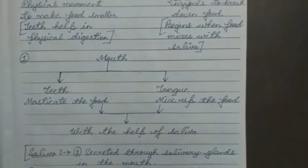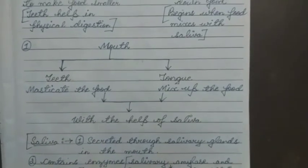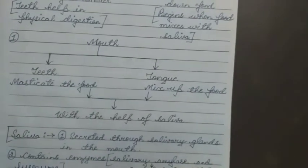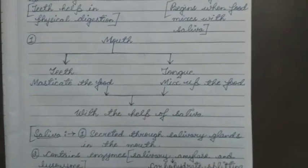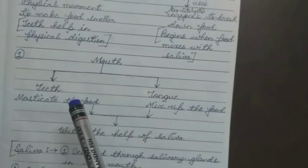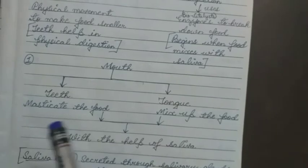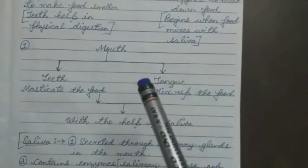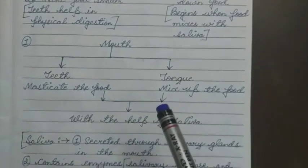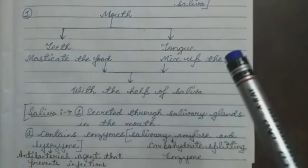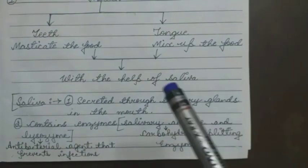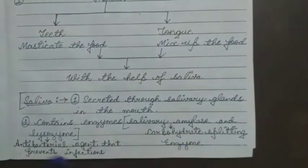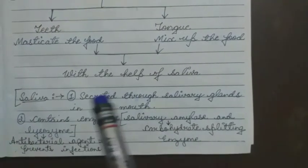Our food first starts to digest in the mouth. In our mouth, both teeth and tongue are present. Teeth help in mastication — breaking food down into smaller pieces. The tongue mixes our food with saliva, which is secreted by salivary glands present in our mouth.